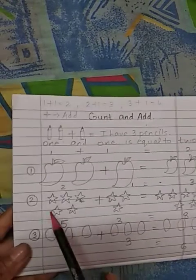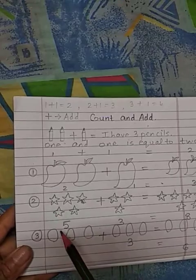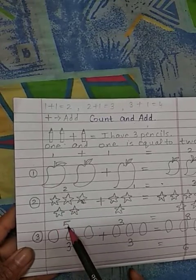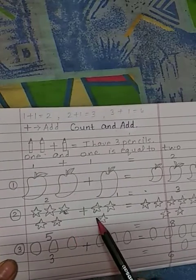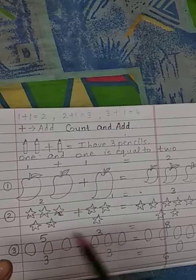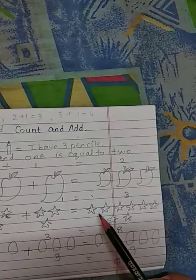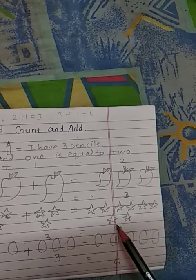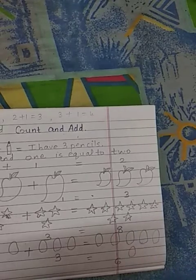Like that, 4 stars. See, count here. 1, 2, 3, 4 and 5. So how many stars? 5. When we add this 5 stars with 3 stars, so in all the total will be, let's count. 1, 2, 3, 4, 5, 6, 7, 8. So 8 stars.